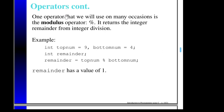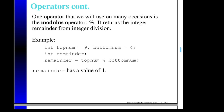Another operator we'll introduce now, because it gets used quite a bit in programming, is what's called the modulus operator. In C, we use the percent sign for that. It returns the remainder from integer division.